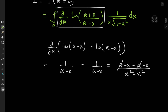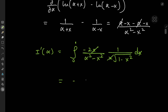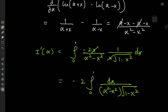Returning to the integration problem, the derivative of I with respect to alpha becomes the integral from 0 to 1 of -2x/(alpha² - x²) times 1/(x times the square root of 1 minus x²) dx. The x terms cancel, leaving us with -2 times the integral from 0 to 1 of dx divided by (alpha² - x²) times the square root of 1 minus x².